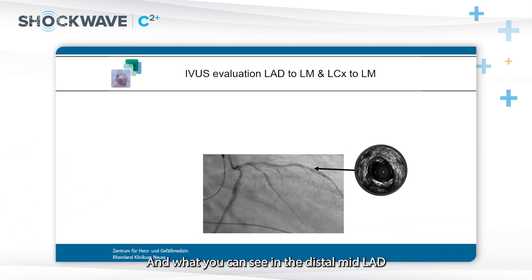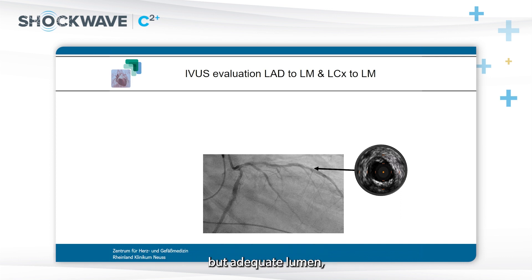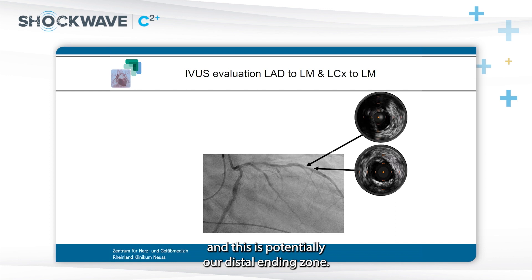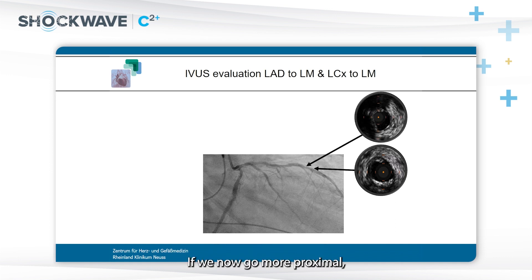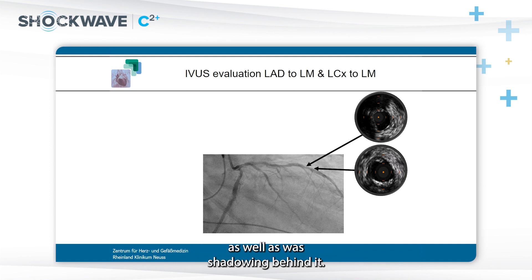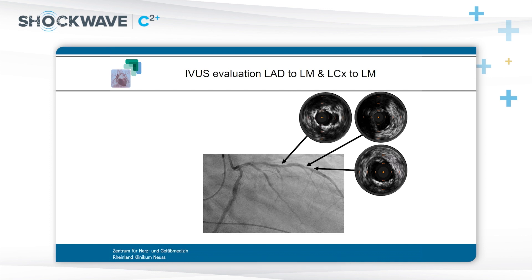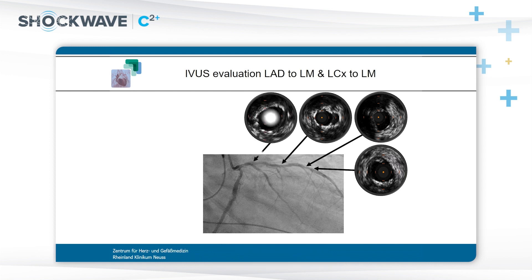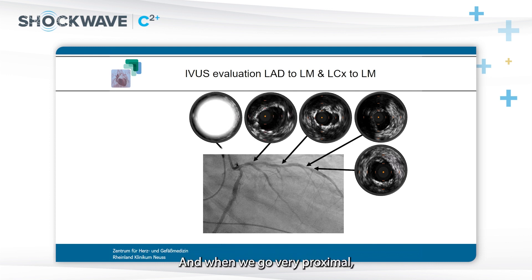In the distal mid LAD, there is some disease with a little spot of calcium at 6 o'clock, but adequate lumen — this is potentially our distal landing zone. Going more proximal, the stenosis builds up and calcium becomes visible both as white color on IVUS and with shadowing behind it, becoming more circumferential, reaching full circumference of the artery.